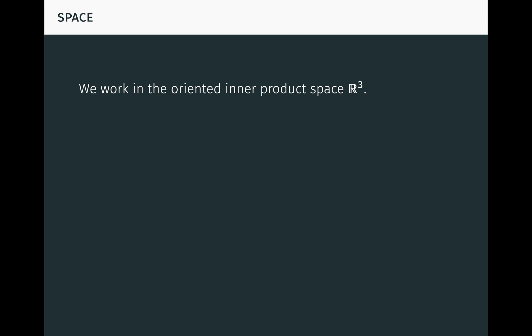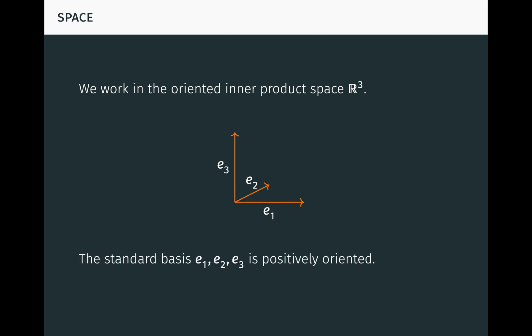In what follows we work in the oriented inner product space R3. I assume you're already familiar with the inner product or dot product. We choose the familiar right-hand orientation of the space, so the standard basis e1, e2, e3, as seen here, is considered positively oriented.